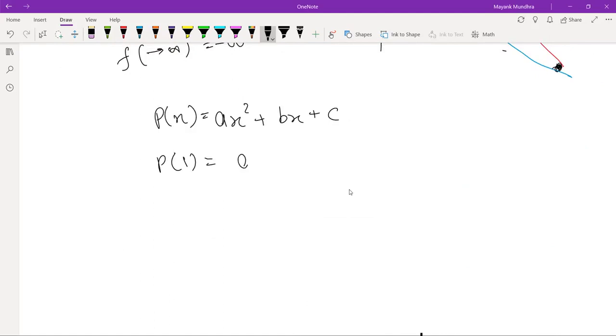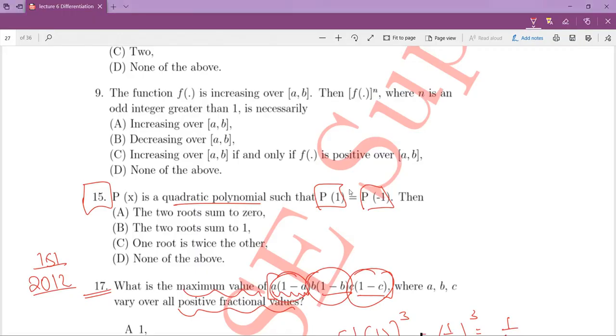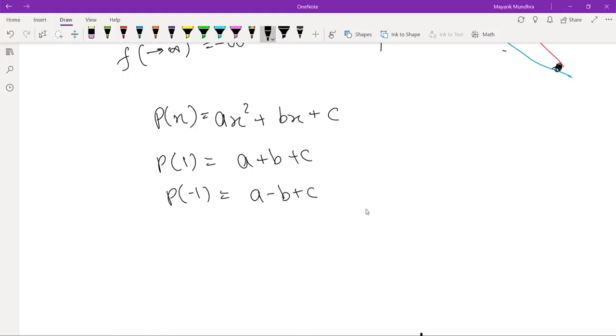So, P of 1 will be A plus B plus C and P of minus 1 will be A minus B plus C. So, I am saying that P of 1 is equals to P of minus 1. So, these two things are equal, this implies that B must be equal to 0.